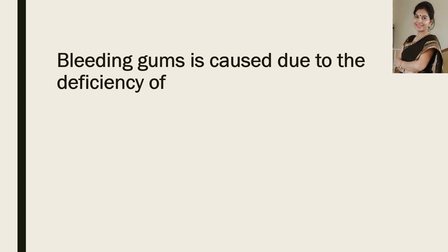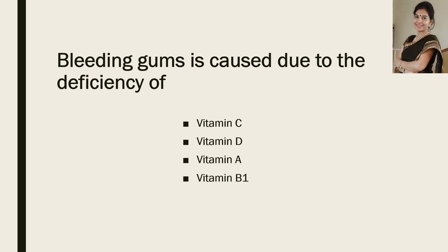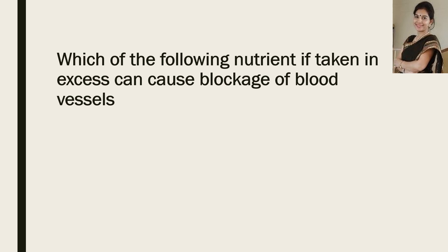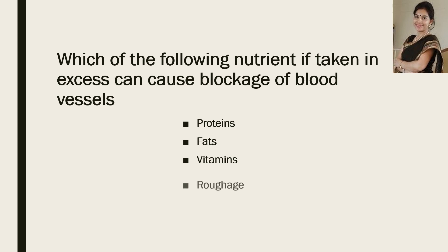Now the next question: bleeding gums is caused due to the deficiency of which nutrient? And the correct answer is vitamin C. Now the next question: which of the following nutrients, if taken in excess, can cause blockage of blood vessels? The options are proteins, fats, vitamins, or roughage. And the correct answer is fats.